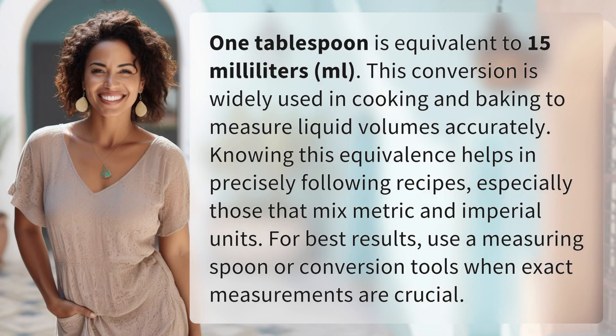One tablespoon is equivalent to 15 milliliters (mL). This conversion is widely used in cooking and baking to measure liquid volumes accurately. Knowing this equivalence helps in precisely following recipes, especially those that mix metric and imperial units. For best results, use a measuring spoon or conversion tools when exact measurements are crucial.